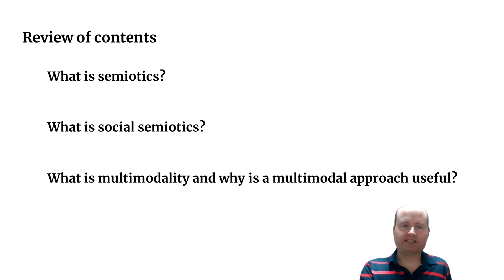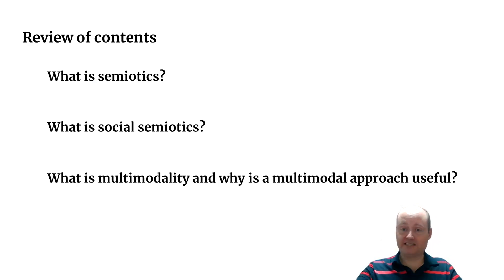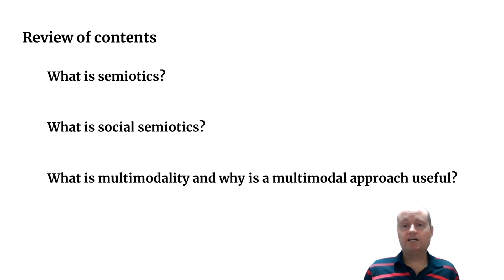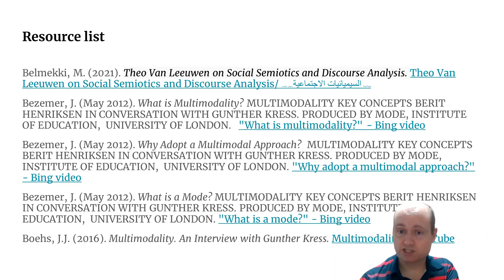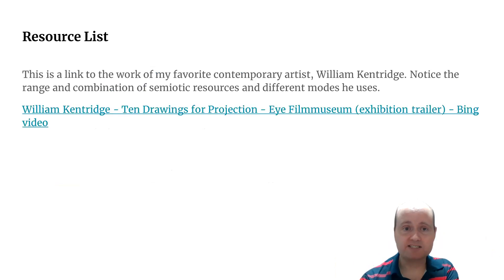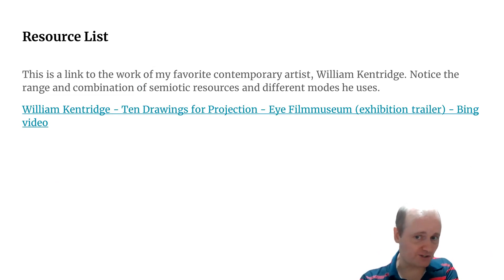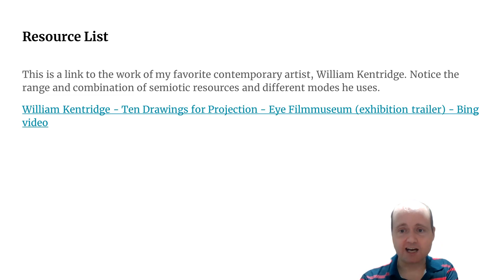To review: we looked at what semiotics is — the basic sign/signifier relationship — then how this expanded into social semiotics, then multimodality and its different modes, and why multimodal approaches are useful for artists. Finally, there is a list of resources used to compile this presentation, plus a link to my favorite artist William Kentridge, who uses semiotic resources to create wonderful artworks — please watch the video. Thanks very much for watching.